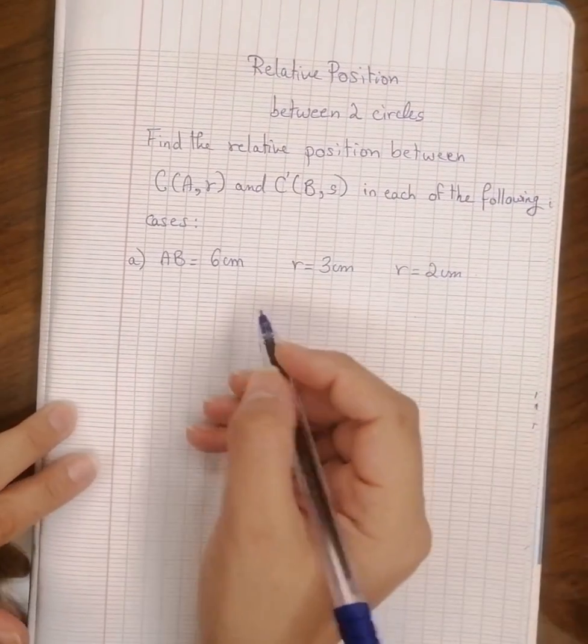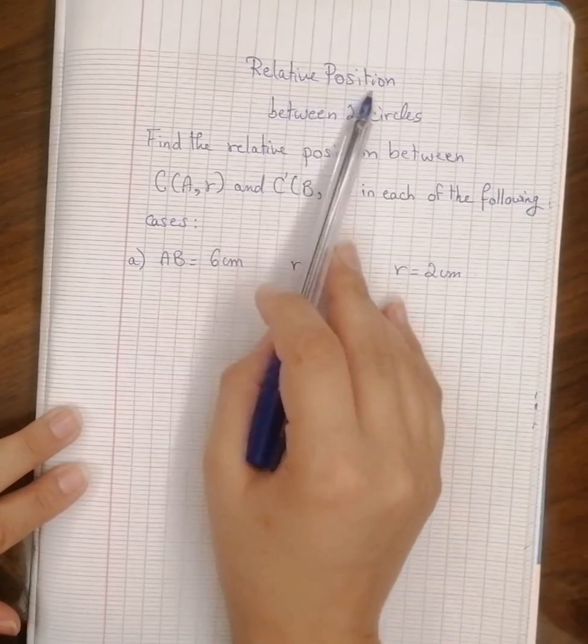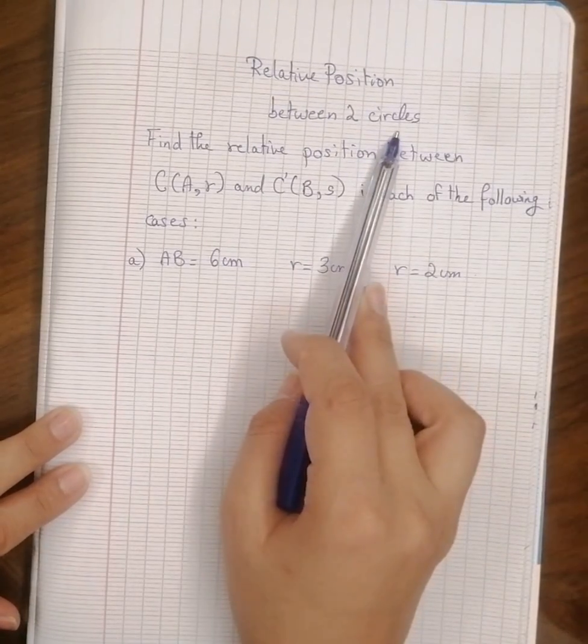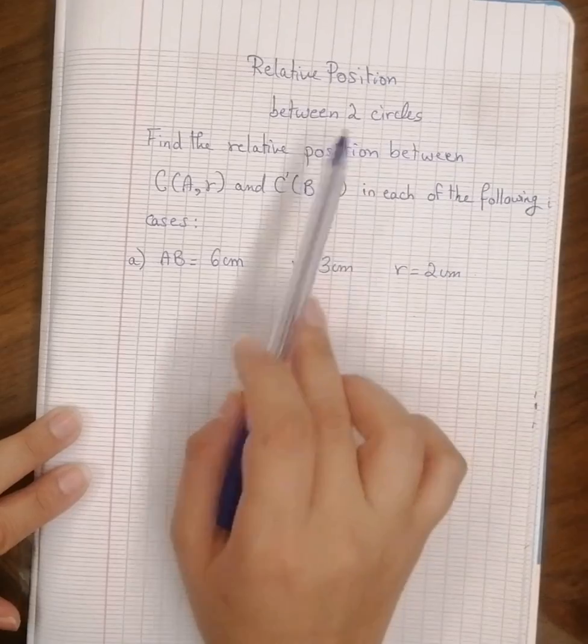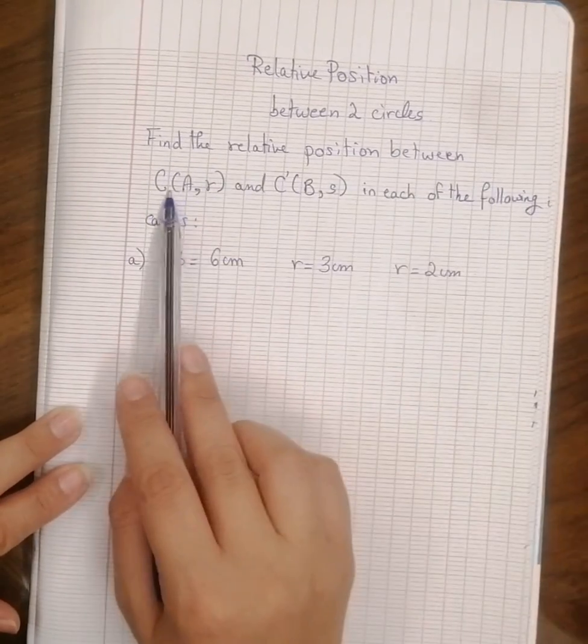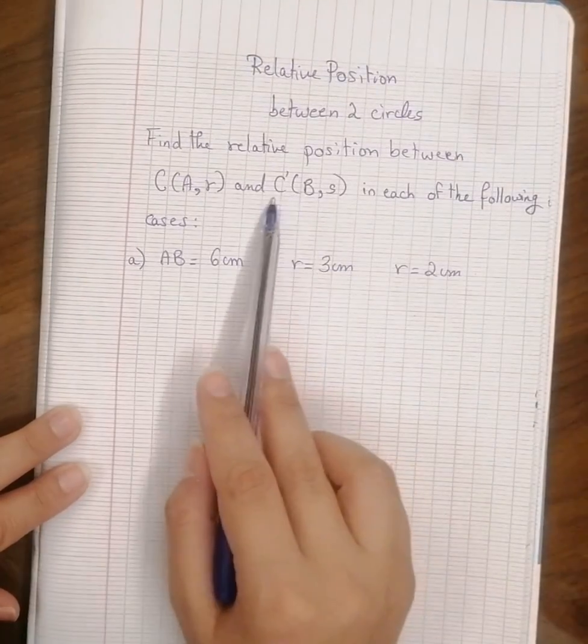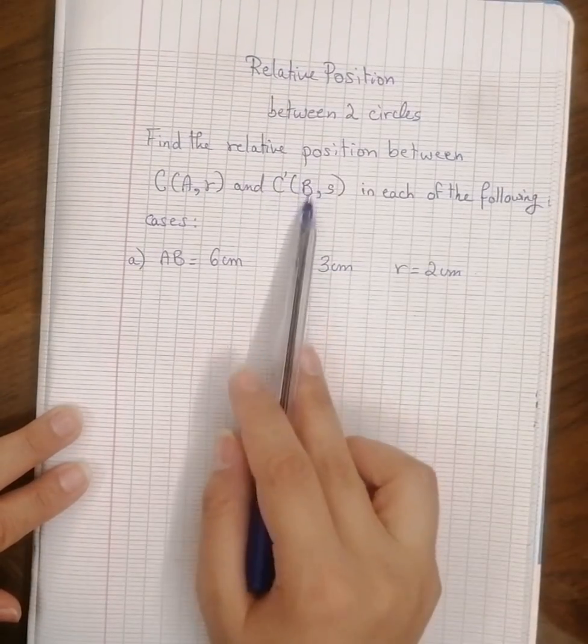Hello dear students, here we want to know the relative position between two circles, but without a drawing. We have to find the relative position between a circle of center A and radius r, and a circle C prime of center B and radius s in each of the following cases.